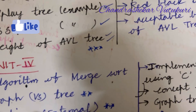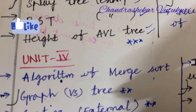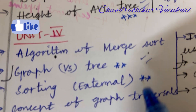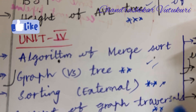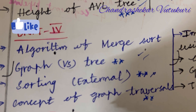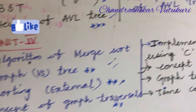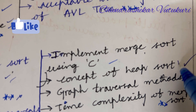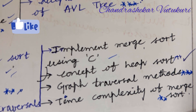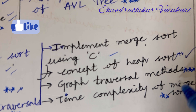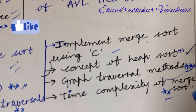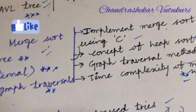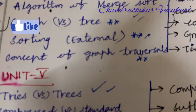Unit 4 is all about sorting algorithms and graphs. Graph versus tree is a common short question. External sorting is very important. The concept of graph traversal is also a very important question. Implementing merge sort using C and the concept of heap sort are topmost questions. Graph traversal methods and time complexity are also very important and may appear in short or long form.